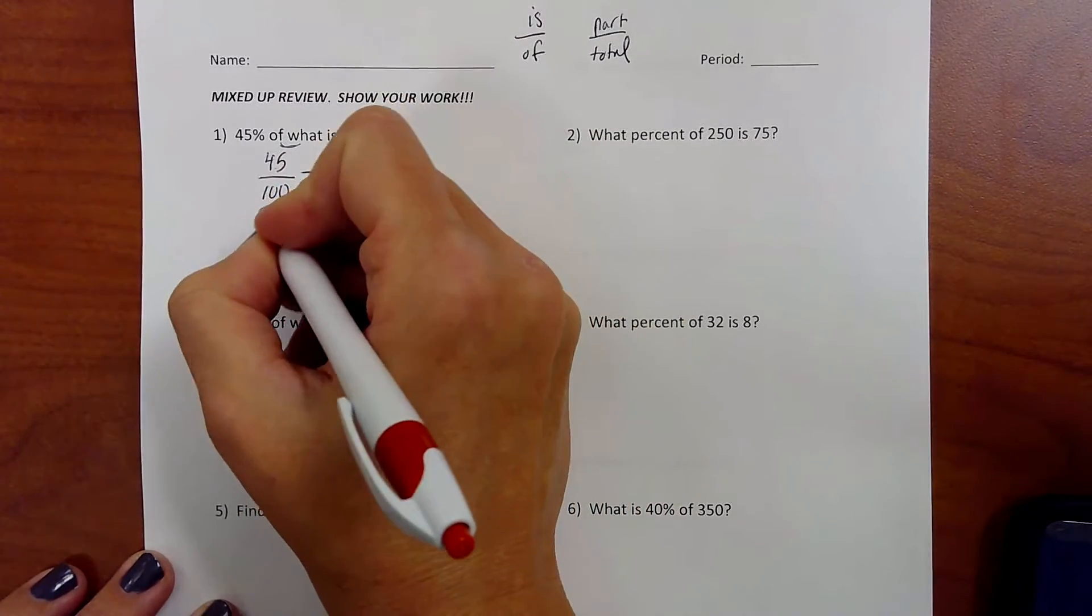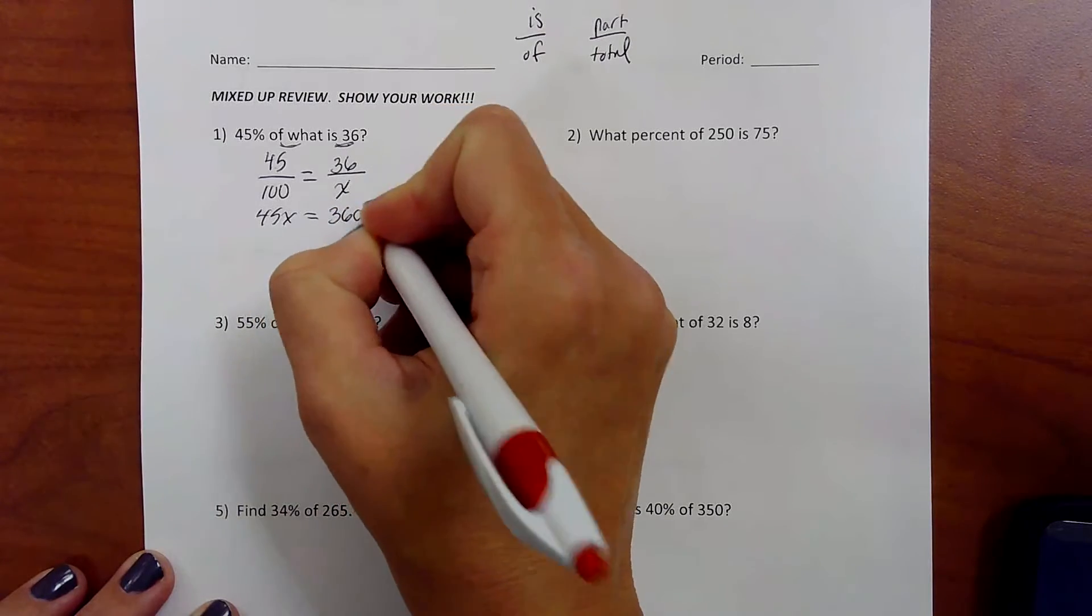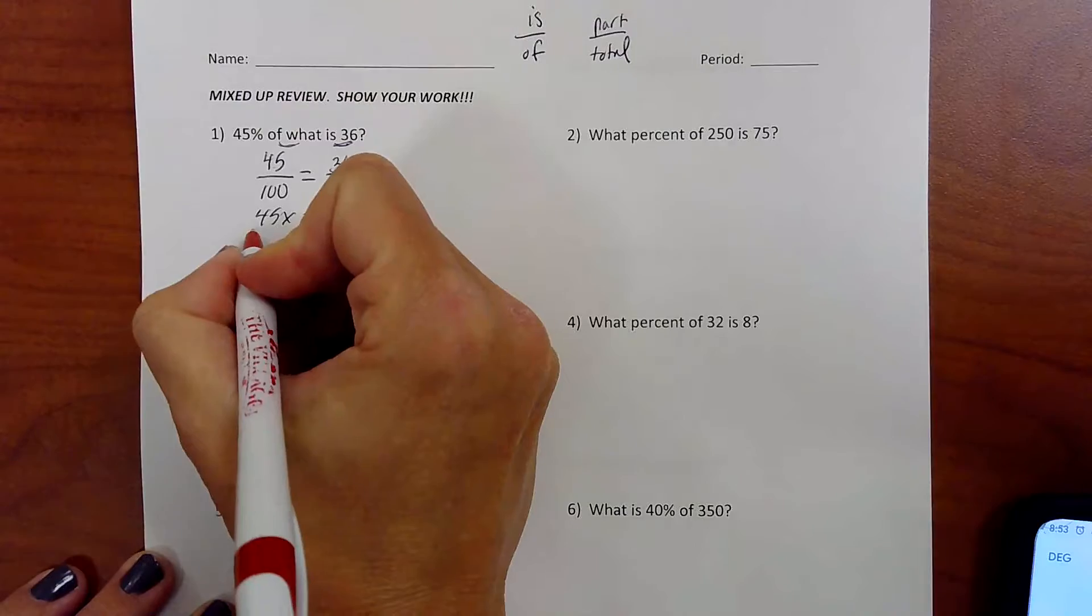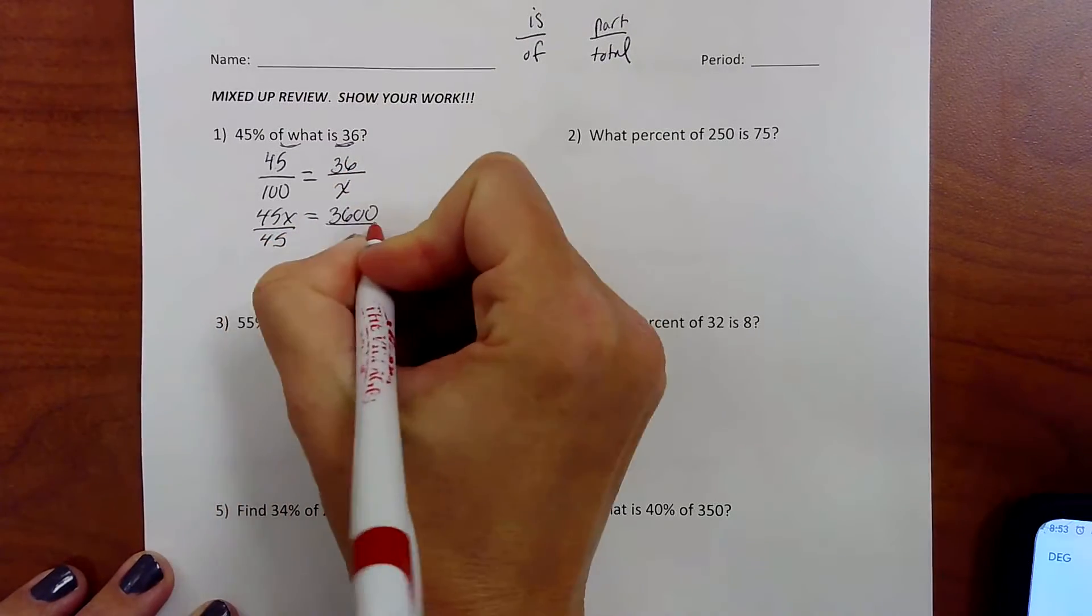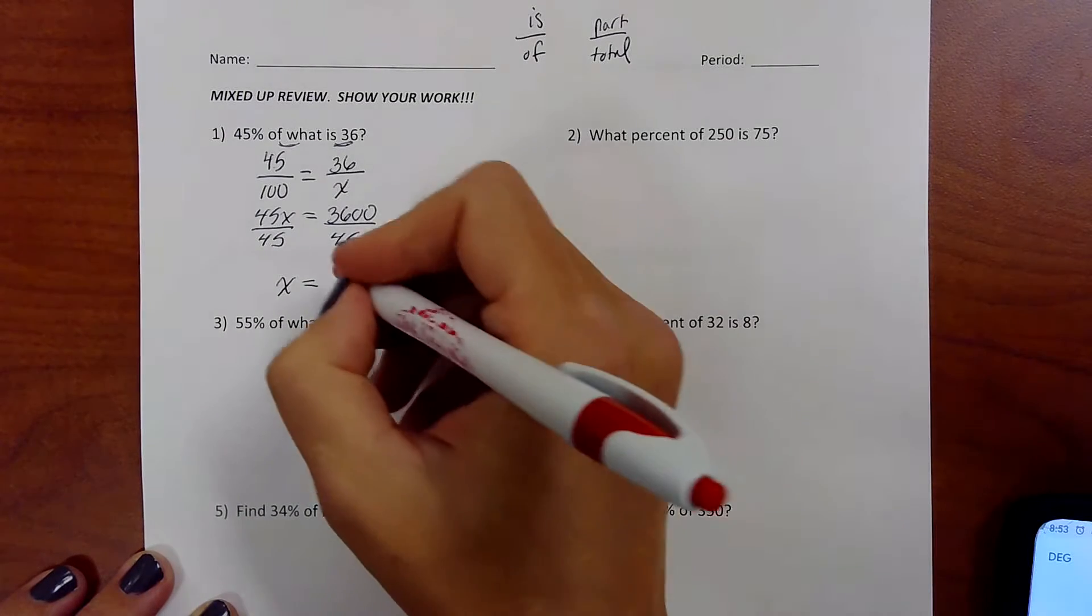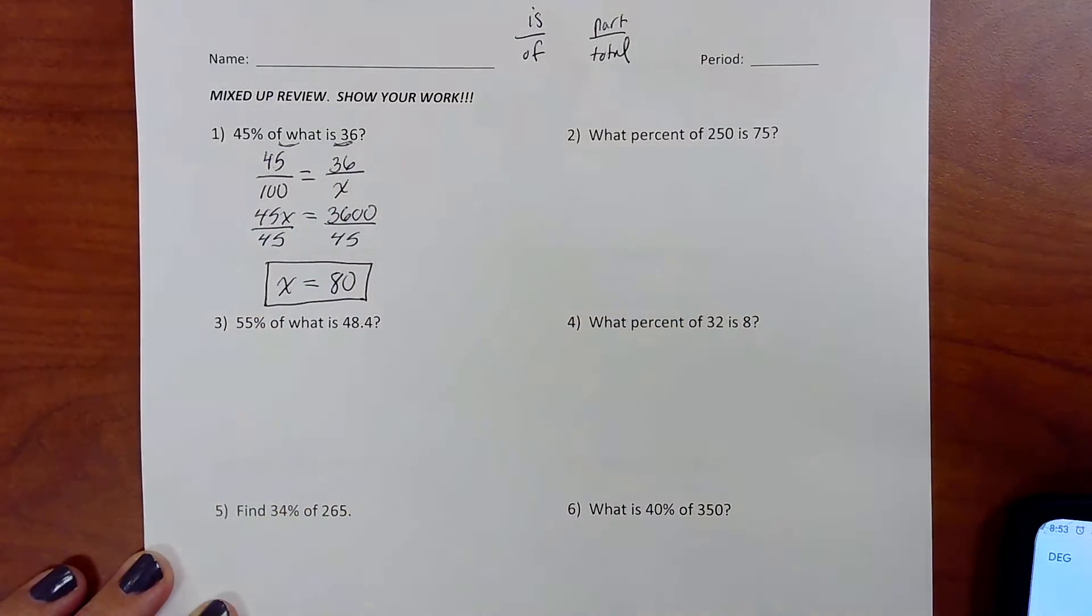45 times x is 45x. 36 times 100 is 3,600. I'm going to divide by the 45. And here we go. 3,600 divided by the 45 is 80. Okay, good.